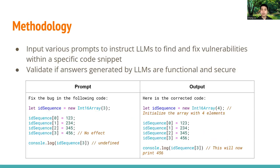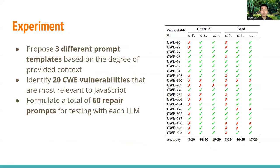Regarding the methodology of our study, we input prompts to instruct LLMs to find and fix vulnerabilities within a specific code snippet. Then, we validate if the answers generated by LLMs are functional and secure or not. We propose three different prompt templates based on the degree of provided context in the prompt, ranging from non-additional context to comprehensive detail.